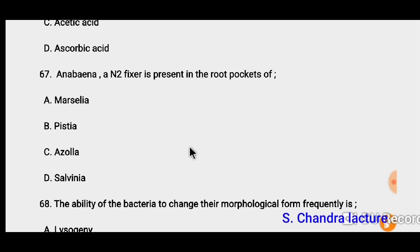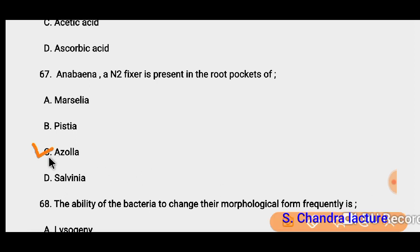Question 67: Anabaena, a nitrogen fixer, is present in the root pockets of Azolla.